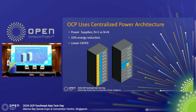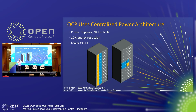It just made sense. If you had all these power supplies with AC cords in the back — somebody told me there's $1,000 worth of AC cords in the back of a typical rack with N plus N. With an OCP rack, you have just two power cords.